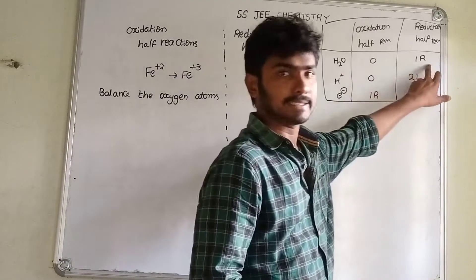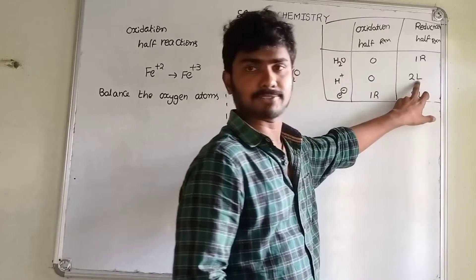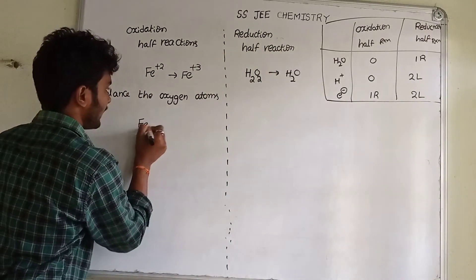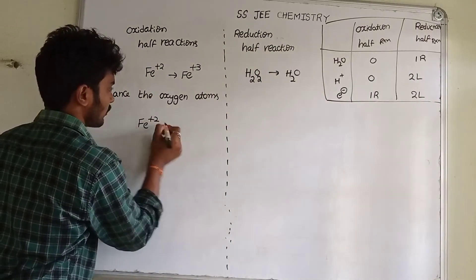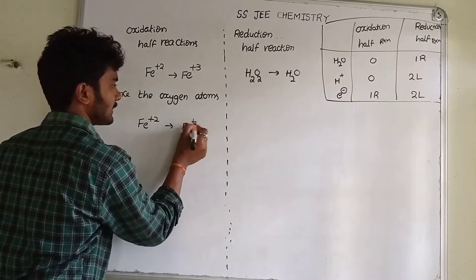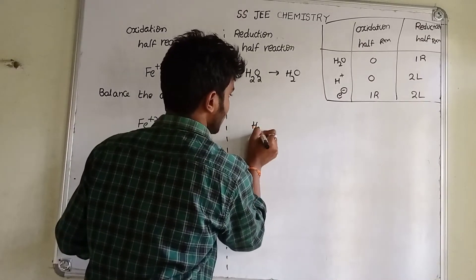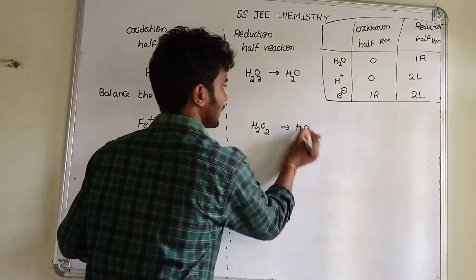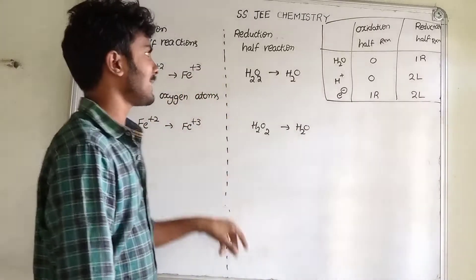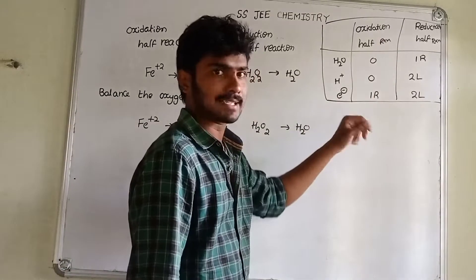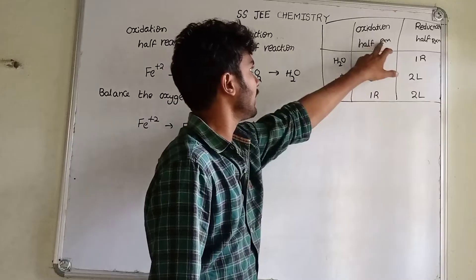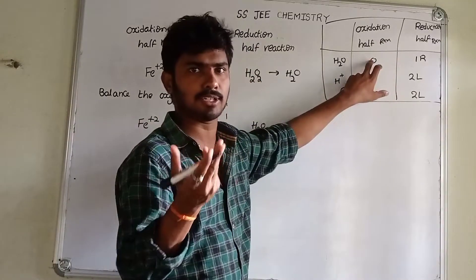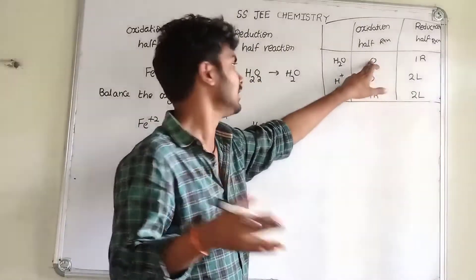Here, R is right and L is left. Let's start the first step. Fe²⁺ gives rise to Fe³⁺. In this equation, H₂O gives rise to H₂O. H₂O will be added. Now, for the oxidation reaction there is 0 H₂O — it's the same.